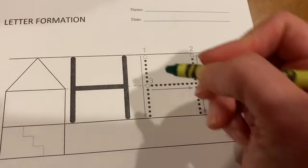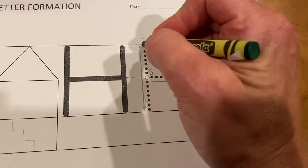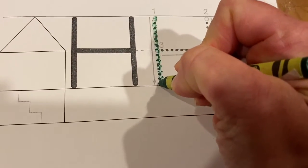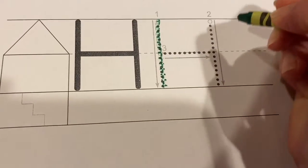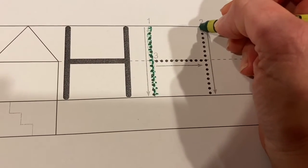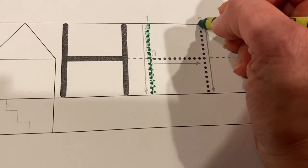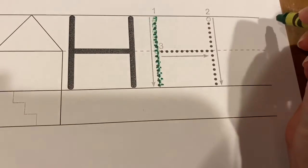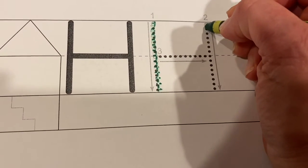Let's practice. Ready? Start at the tippy top and come all the way down, stop at the bottom line. Come out a little bit. Not too skinny, not too fat. Come out a little bit.